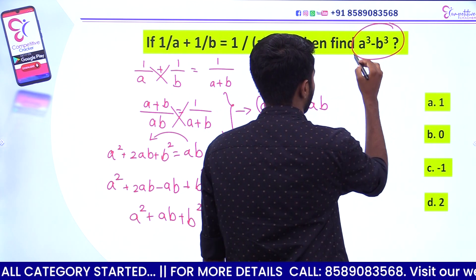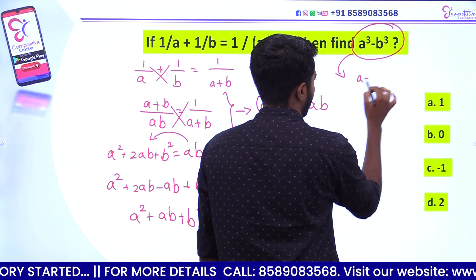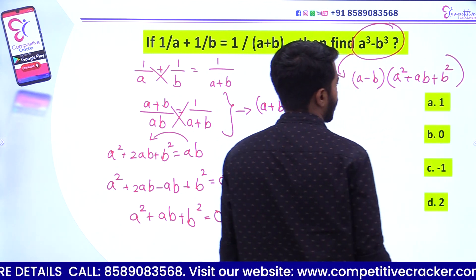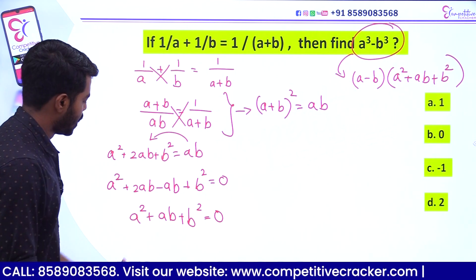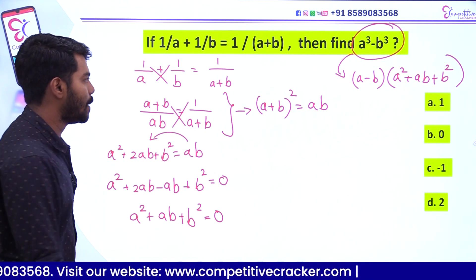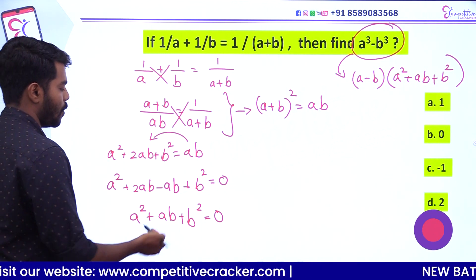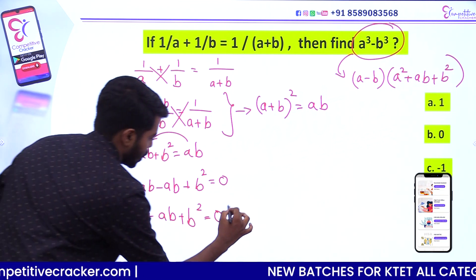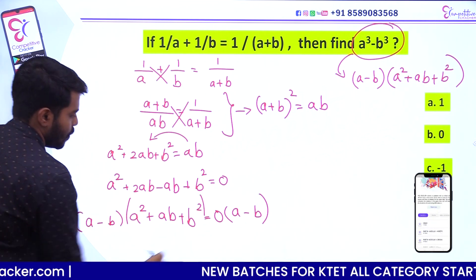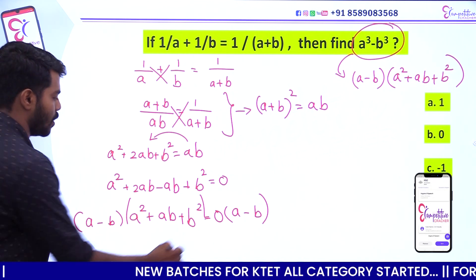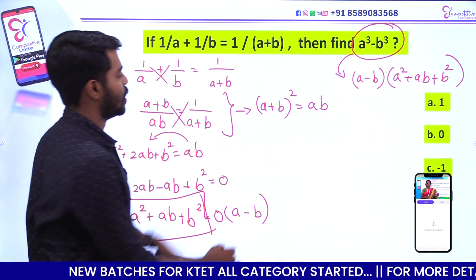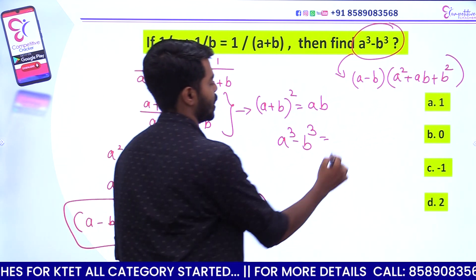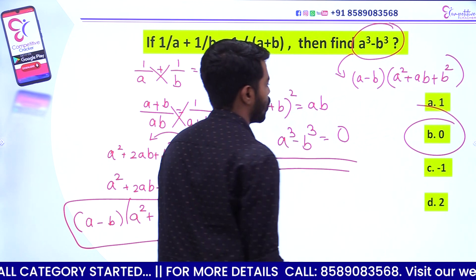What is a cube minus b cube? The equation for a cube minus b cube is: a minus b into a square plus ab plus b square. If I change the term and multiply on both sides, a minus b into a square plus ab plus b square equals 0 into something, which is 0. So a cube minus b cube is equal to 0. Option B.